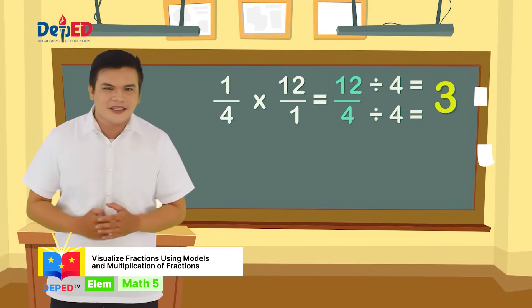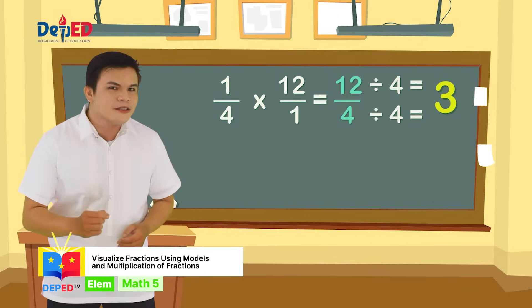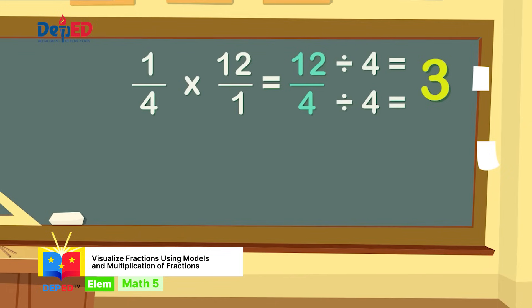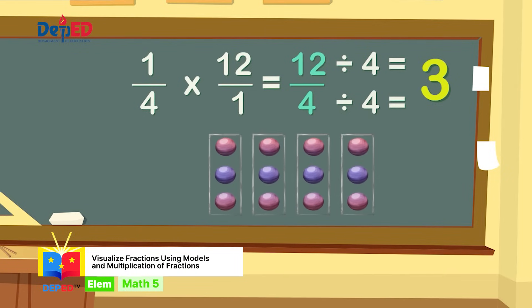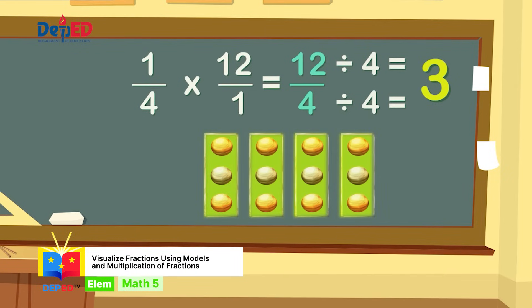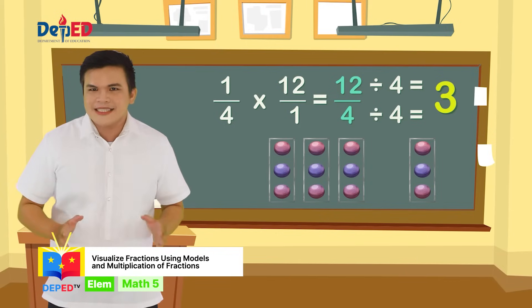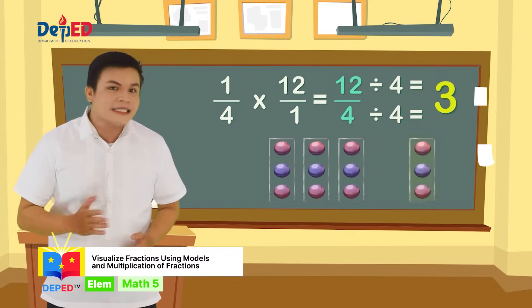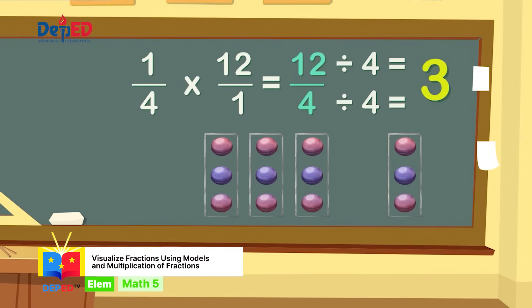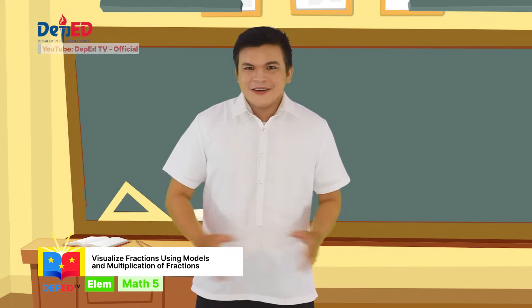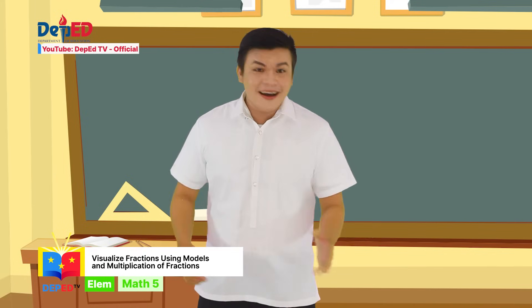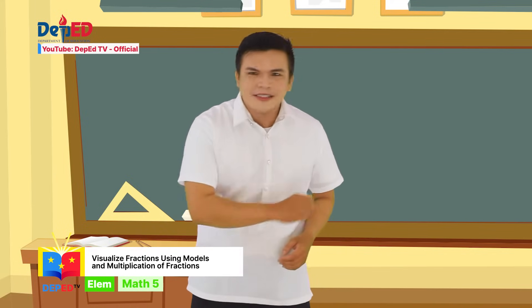Math heroes, let's visualize this using marbles. These are the 12 marbles of Che. She divides her marbles into 4 groups — each group represents one-fourth of her 12 marbles. Che gives one-fourth of her marbles to Arnold. Looking at the illustration, one-fourth of 12 is 3. Therefore, Che gave 3 marbles to Arnold. Congratulations, math heroes — you've done an incredible job!